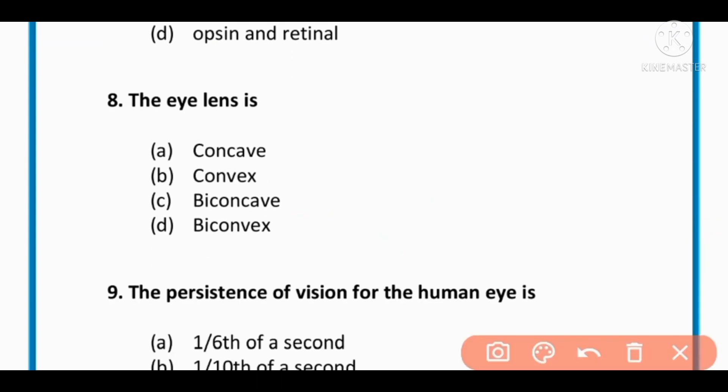MCQ number 8: The eye lens is concave, convex, biconcave, or biconvex. The correct option is D: the eye lens is biconvex.